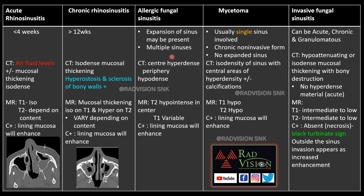Allergic fungal sinusitis usually affects multiple sinuses. On CT, it shows central hyperdensity and peripheral hypodensity. On MRI, T2 hypo-intensity in the center and T1 variable signal intensity is seen. Mycetoma usually affects a single sinus, which is a chronic non-invasive form. On CT, isodensity of the sinus with central hyperdensity and calcifications may be seen. T1 and T2 show hypo-intensity. In all these four conditions, the lining mucosa will be enhancing on post-contrast. Whereas in invasive fungal sinusitis, if enhancement is absent, it is known as the black turbinate sign because of necrosis.